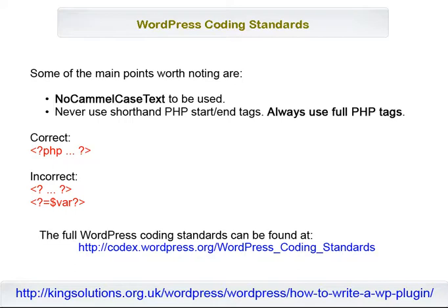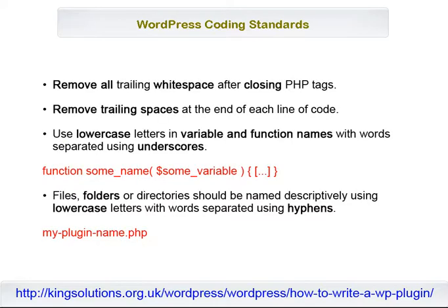Some of the main points worth noting are: no camel case text to be used; never use shorthand PHP start and end tags — always use full PHP tags; remove all trailing whitespace after closing PHP tags; remove trailing spaces at the end of each line of code; use lowercase letters in variable and function names with words separated using underscores. Files, folders, or directories should be named descriptively using lowercase letters with words separated using hyphens.